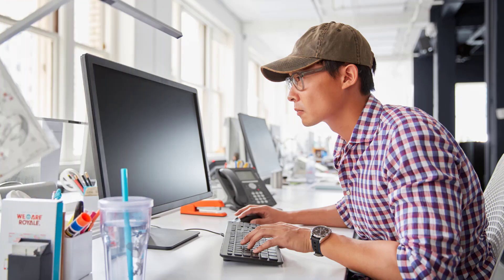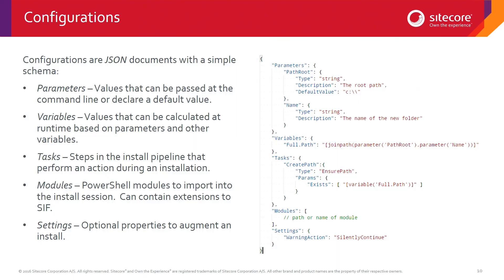As I mentioned, we've got a list of key sections — these are really the only sections that you ever need to put in there. So parameters are the values that can be passed in at the command line. They can also declare a default value, so if you don't provide it, a value will be there. They effectively are constants — once they've come in from the command line and been used, their values will never change.